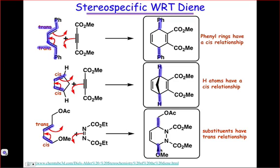The best way to think about this is to imagine drawing a C shape where the double bonds of the diene are in the S-cis conformation. If both substituents are outside of this C shape, then those substituents will end up cis in the product. On the other hand, if one substituent is inside the C shape and the other is outside — as in this case where the methoxy is inside and the methyl acetoxy is outside — then we'll end up with a trans relationship between the substituents.